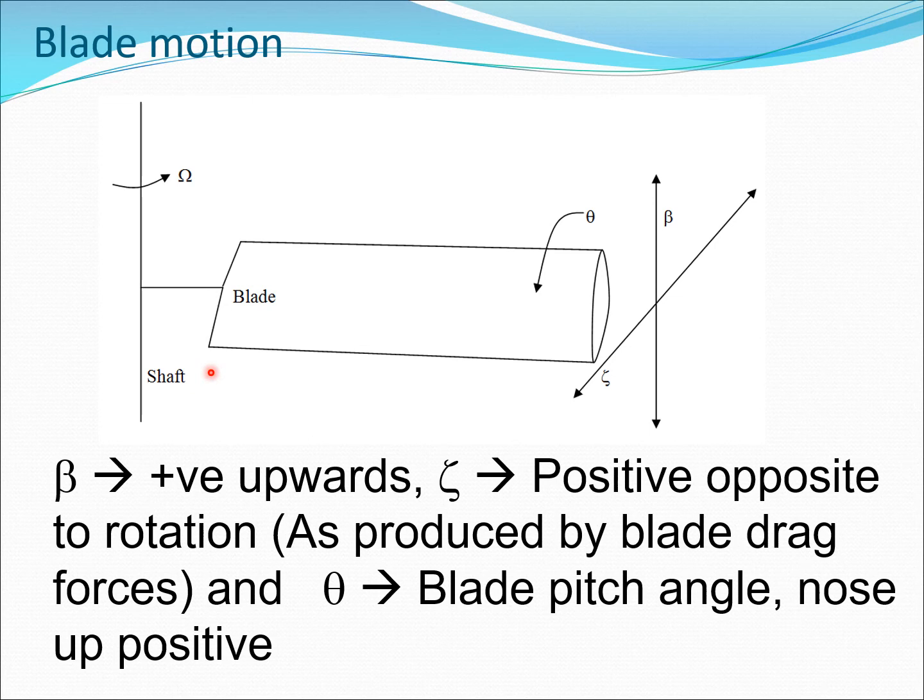Let's get back to the rotor blade. We have defined the flap motion, which is positive going up, negative going down. Zeta, or the lag motion, is positive opposite to rotation. This would be produced by the blade drag forces. Theta, the blade pitch angle, is nose up positive. These three angles typically define the motion of a typical rigid blade.